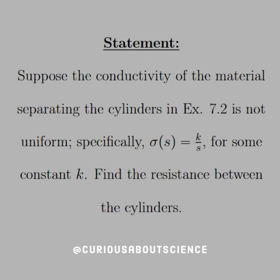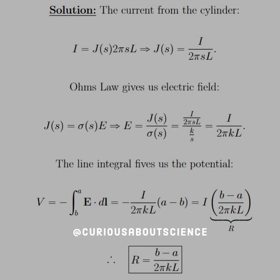All right, let's get another quick conceptual one here. The statement says: suppose that the conductivity of the material separating the cylinders in example 7.2 is not uniform; specifically, the conductivity σ(s) = k/s, or is inversely proportional for some constant k. Find the resistance between the cylinders.